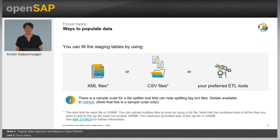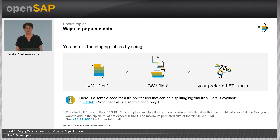Let's look at the different possibilities available to fill the staging tables. You can use XML template files, CSV files, or your preferred ETL tools. For files, there is a size limit of 100 MB. You can upload multiple files at once using a zip file, but the combined size of all files must not exceed the limit. Please refer to the mentioned KBA for further information. If you have huge data volumes, there is also sample code for a file splitter tool available on GitHub.